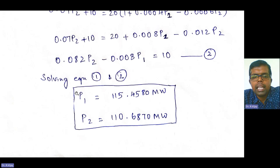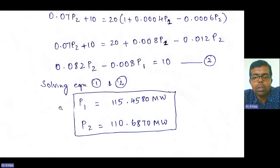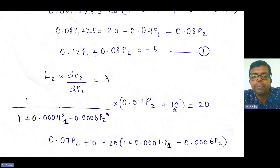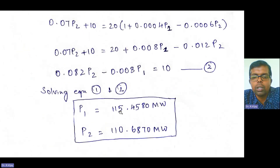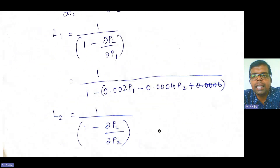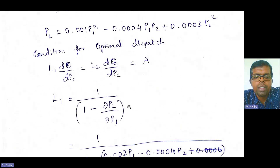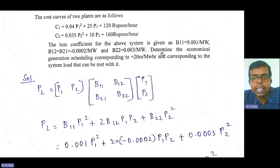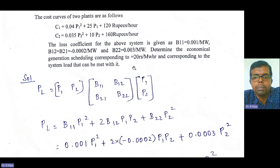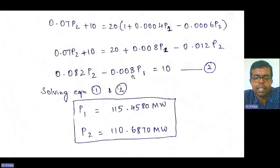Please check in the comments whether you are getting the same answer. Remember not to round off after the decimal — take four decimal digits. In this problem the demand is not explicitly given, so no need to verify against demand. The problem only asks for the economical generation schedule, so P1 and P2 are the final answers. Highlight them. Thank you.